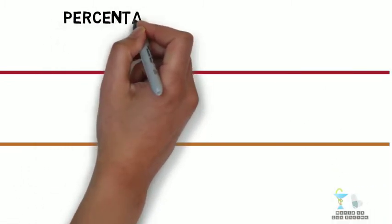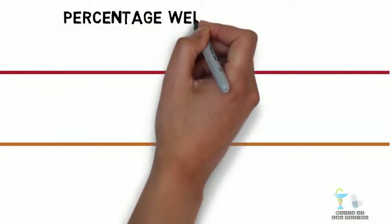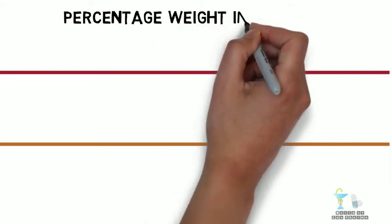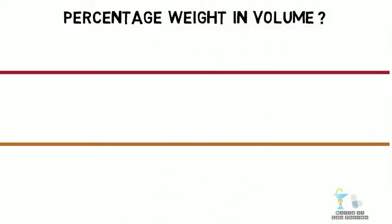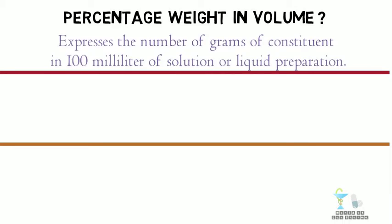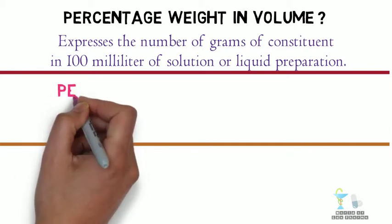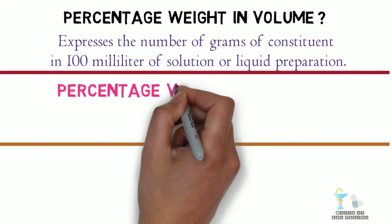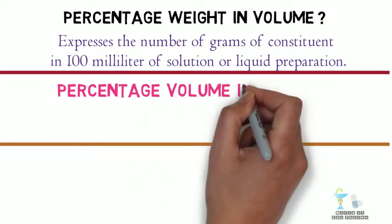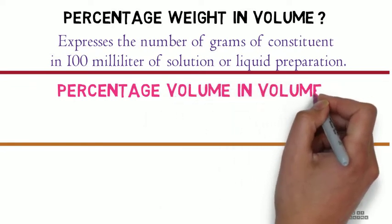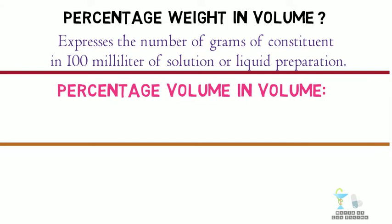Let us begin. First, what is percentage weight in volume? It expresses the number of grams of a constituent in 100 milliliters of solution or liquid preparation. Weight refers to solids expressed in grams and volume refers to liquids expressed in milliliters.